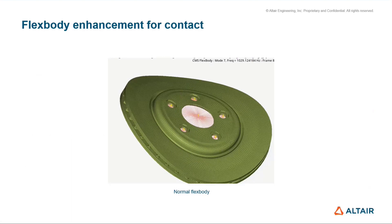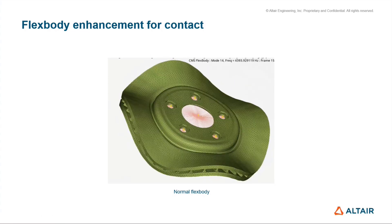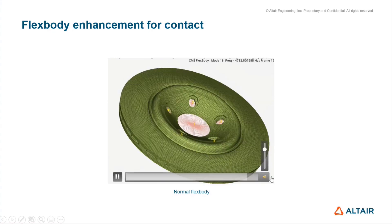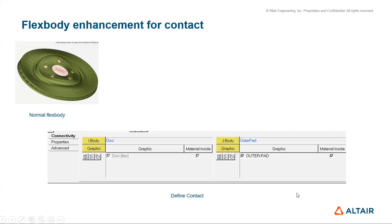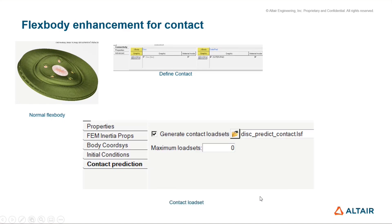Let's take a disk brake example. We start with a regular FlexBody — a standard FlexBody that many of us are used to. There are a certain number of modes with this FlexBody. Next, you define contact in Motion View using the standard panel. The panel will identify that there is a FlexBody attached and you can define contact with other bodies. In the Flexible Body panel, there is an additional tab called Contact Prediction.